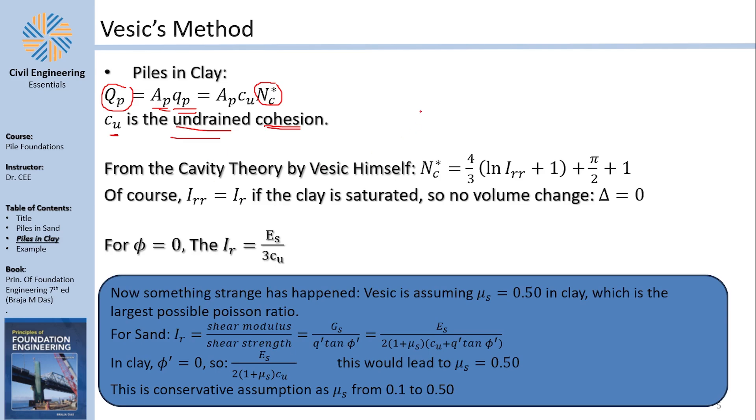Now, once again, from Vesic himself, he basically tells us that Nc is this cool equation. So once again, we are stuck with finding Irr. But how can I find Irr? Well, Irr, in this case is equal to Ir. Why? Because Δ is zero, assumed to be zero in clay.